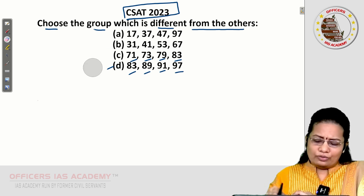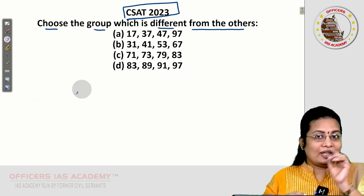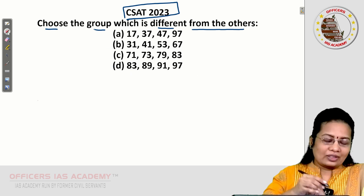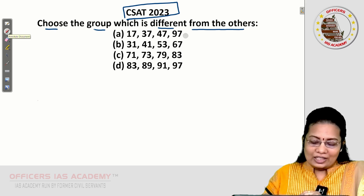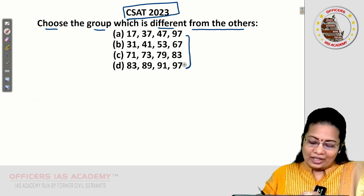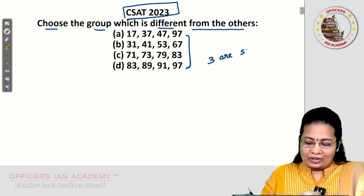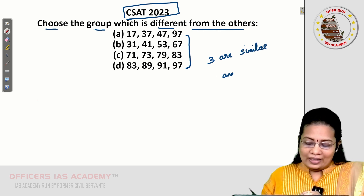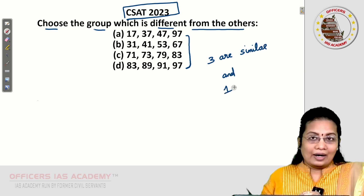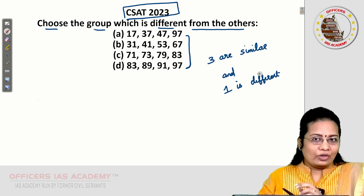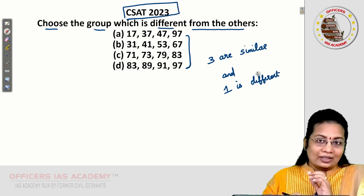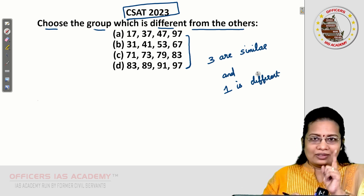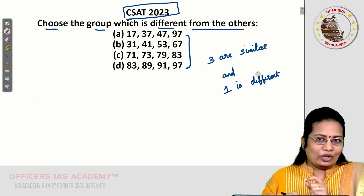Each option contains a set of four numbers. Among these four options, three are similar in one way and only one is different from the other three. Our work is to find that different one.